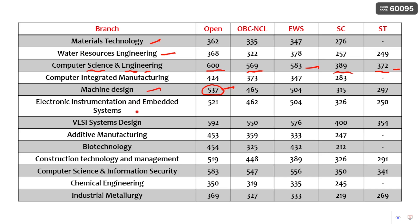Electronic Instrumentation and Embedded Systems cutoffs are also given here. VLSI — a top branch from ECE that many students compete for — has an open cutoff of 592, OBC Non-Creamy Layer 550, EWS 576, SC 400, and ST 354. Construction Technology and Management, a top branch from Civil Engineering, has an open cutoff of 519, with all other category cutoffs provided.